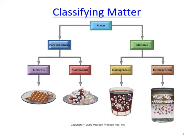This is the most commonly used chart in chemistry classes. Matter can be classified by two different sides: pure substances and mixtures. After that, we may have two types for each one. For pure substances we have elements and compounds, and for mixtures we have homogeneous and heterogeneous mixtures.